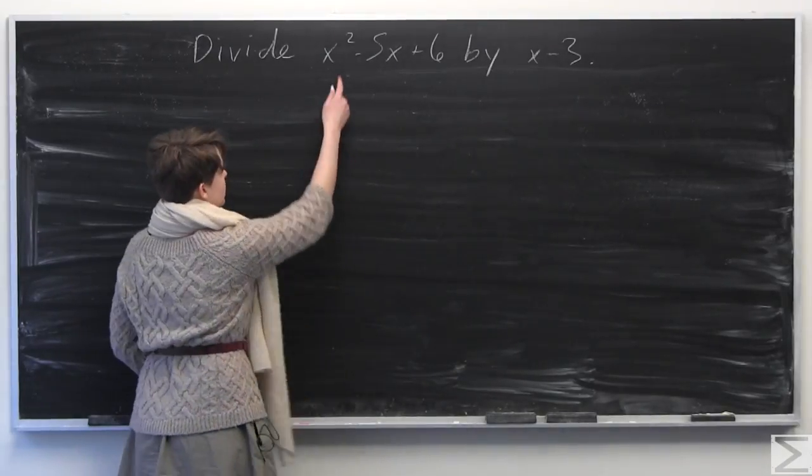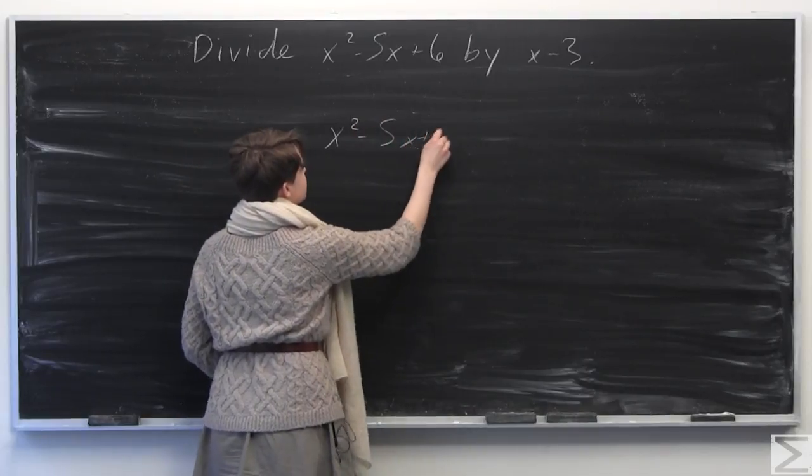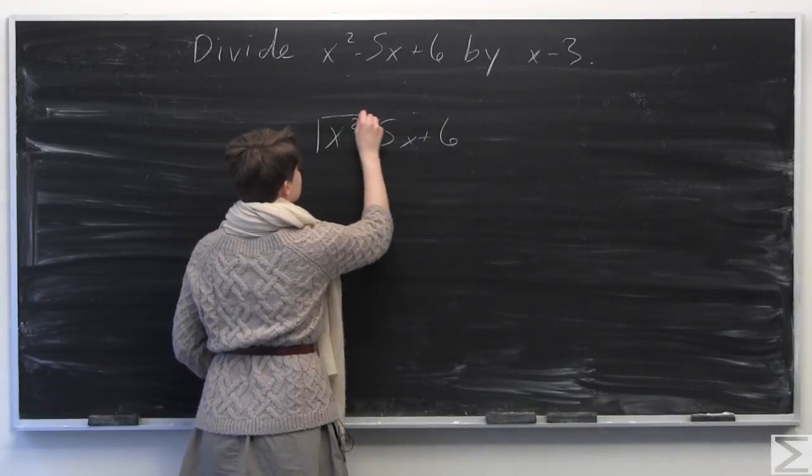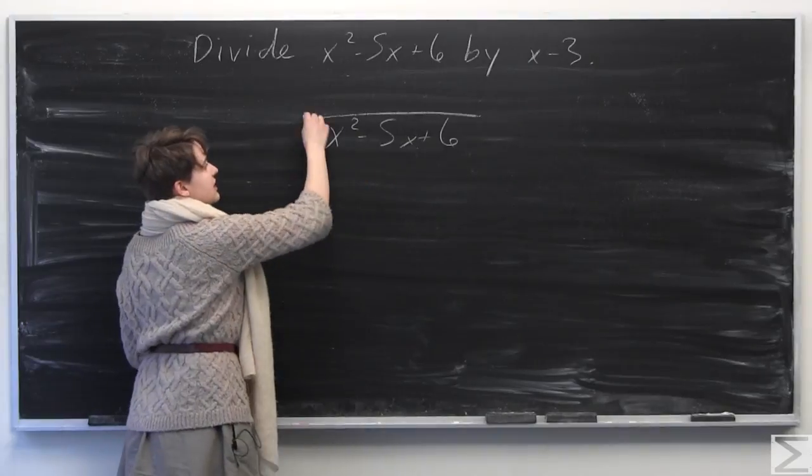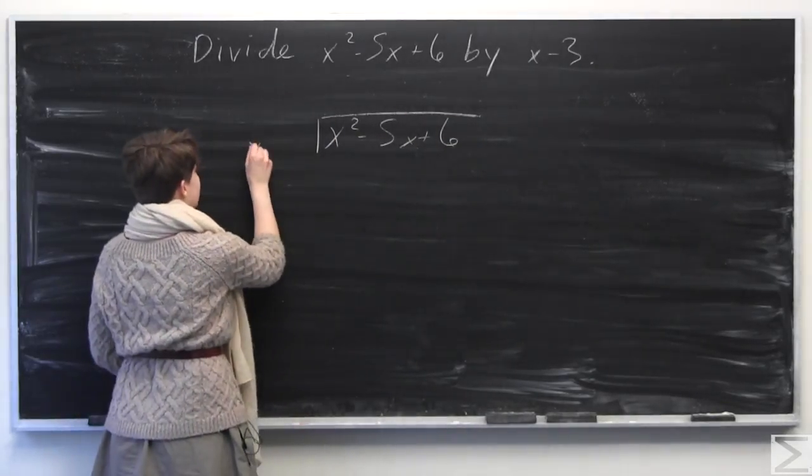We're going to copy down this polynomial, x squared minus 5x plus 6, and set this up exactly as you would a regular integer long division. Divide this all by x minus 3.